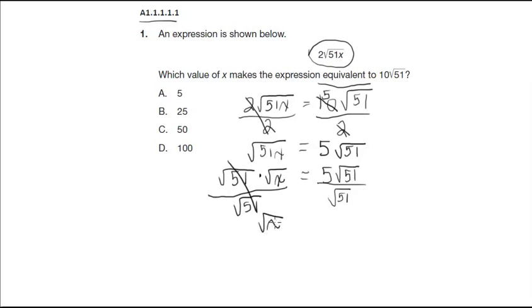So, I have the square root of x is equal to 5, which you should be able to solve by now on your own by squaring both sides. So, x is equal to 25. So, the answer to this question is B.